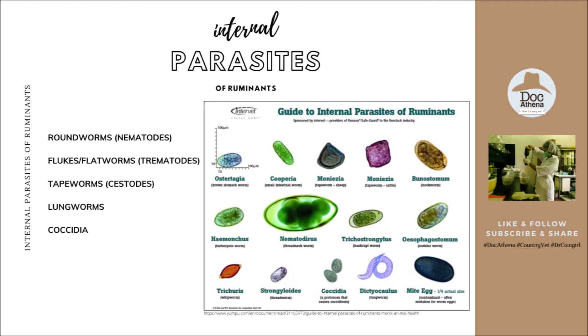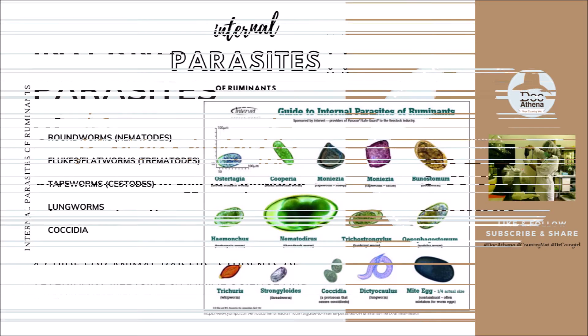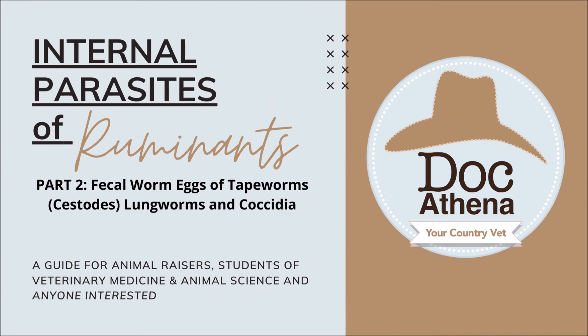For now, let me give you an overview. We will be discussing roundworms or nematodes, flukes or flatworms also called trematodes, tapeworms also called cestodes, and also lungworms and coccidia. For this lecture, Part 2 of internal parasites of ruminants, we will be discussing tapeworms or cestodes, lungworms, and coccidia.